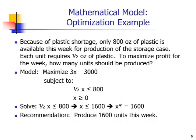Let's take a look at the second example of a mathematical model: an optimization example, which means we're concerned with maximizing or minimizing something. Here, NowLink wants to decide how many storage cases to produce, given that there's a limited amount of plastic. There is only 800 ounces of plastic available this week, and each unit requires half an ounce. To maximize profit this week, how many units should be produced? To formally state the problem, we write it like this: we want to maximize the profit.